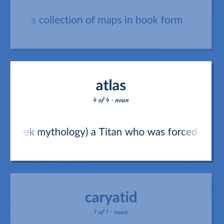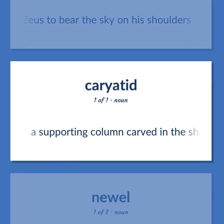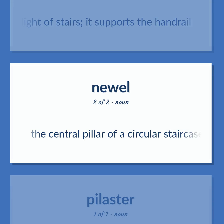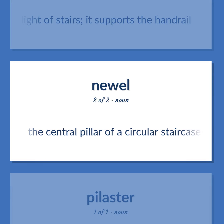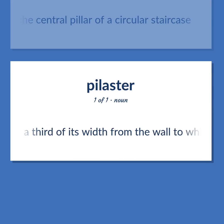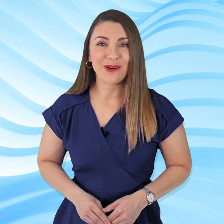Atlas (mythology): A Titan who was forced by Zeus to bear the sky on his shoulders. Caryatid: A supporting column carved in the shape of a person. Newel post: The post at the top or bottom of a flight of stairs; it supports the handrail. Newel: The central pillar of a circular staircase. Pilaster: A rectangular column that usually projects about a third of its width from the wall to which it is attached.